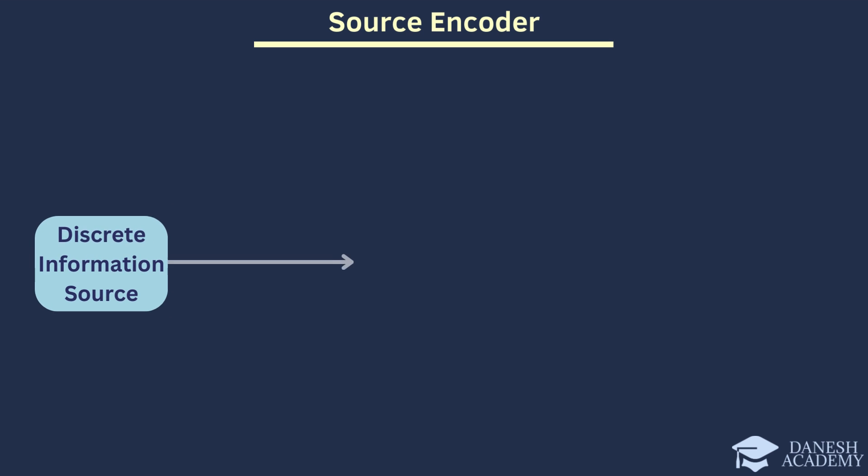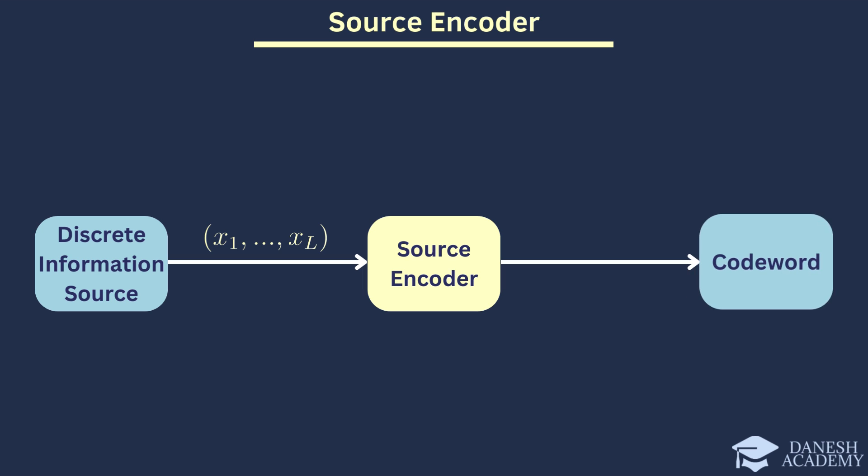Let's observe a discrete information source. It produces symbols, but in our case, it generates what we call super symbols, denoted as X1 through XL. These super symbols are the basic units of information that we aim to encode and transmit. As the super symbols are generated, they pass through the encoder. Here, each super symbol is transformed into a corresponding codeword. For example, super symbol X1 might be encoded into codeword C1, and so on up to codeword CL. The process of encoding ensures that each super symbol is represented by a unique codeword. It's important to note that the length of these codewords may vary. We denote the length as N1 through NL. This variability in length allows us to achieve efficient encoding, where more frequently occurring super symbols may have shorter codewords, while less frequent ones may have longer codewords.